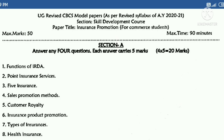Hello all, once again welcome to VSK. Today we are looking at the B.Com undergraduate revised Choice Based Credit System model paper. This is for the 2021-2022 revised syllabus, skill development course, with the paper title 'Insurance Promotion' — for commerce students.